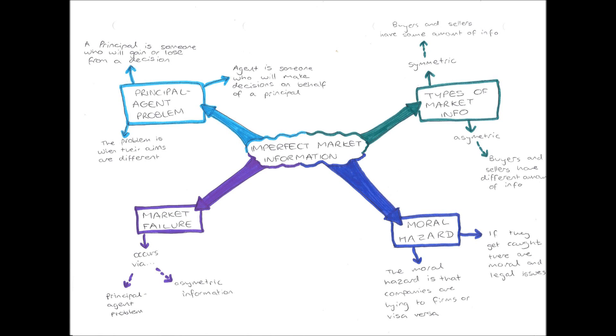The principal-agent problem occurs when the aims and opinions and ideas of principals are different to those of the agent. For example, the agent, say the chief executive officer of B&Q, might say actually our plant pot range has done really well this year, so we're going to get in some more plant pots and keep on selling them because we're making a lot of profit from them. But then the principal, one of the big shareholders in B&Q, might say actually no, I want us to start selling sheds because I think we can make more profit from sheds. So because their aims are different, the principal-agent problem has occurred.